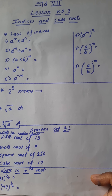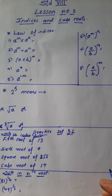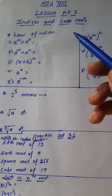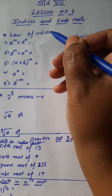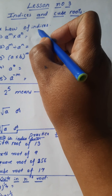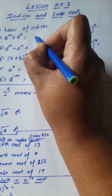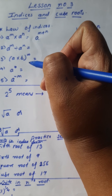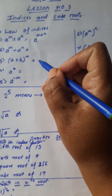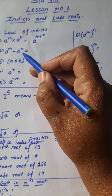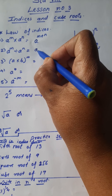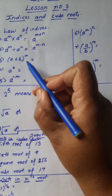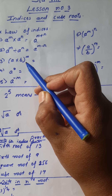Question number 1: it is given as a raised to m multiplied by a raised to n. Here you will see that the base a is the same but only the power is different. So when there is a multiplication sign, we will write a raised to m plus n. When there is a multiplication we will add. Next, a raised to m divided by a raised to n — here we write a raised to m minus n.